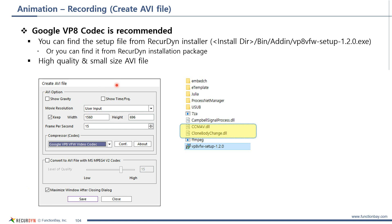You can save the animation as a video file using recording. The codecs used for recording are the ones installed on your computer. The video quality using the default codecs of Windows is usually not good, so I'd like to recommend using the Google VP8 codec. It is not a default codec, so you need to install it if it is not displayed in the dialog. You can find the installer from the RecurDyn installed path or installation package, or download it from the internet.